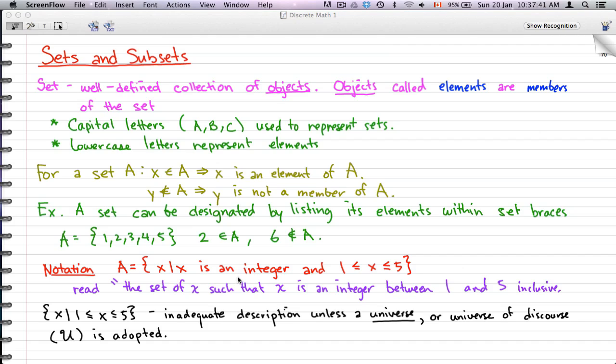What we have here, 1 ≤ x ≤ 5, is an inadequate description unless we have a universe. You will always need a universe, or else this kind of notation wouldn't work. It's an inadequate description unless a universe or a universe of discourse U is adopted.